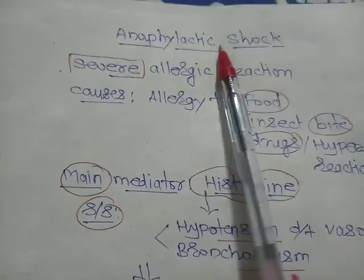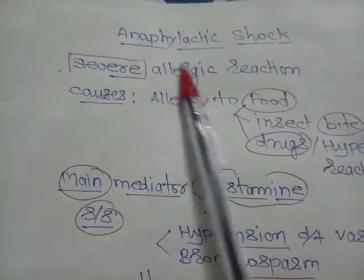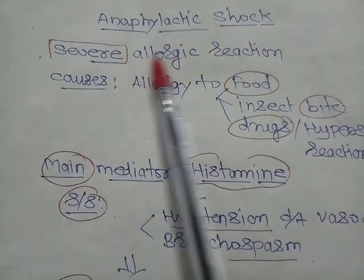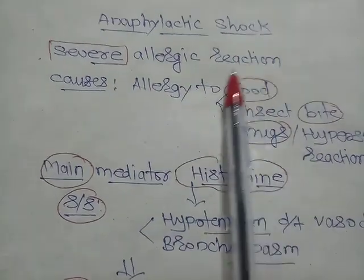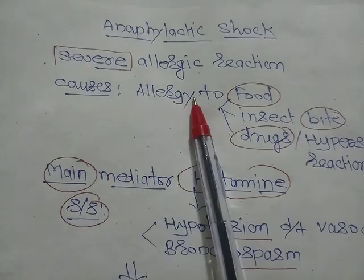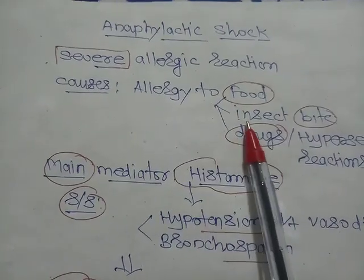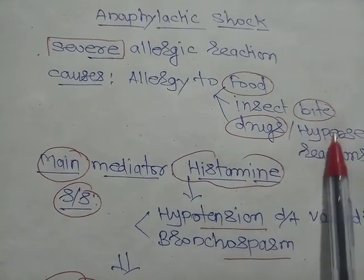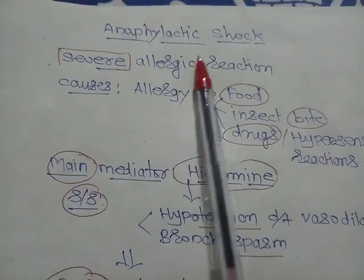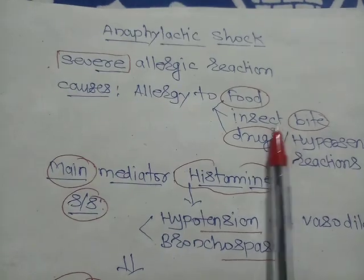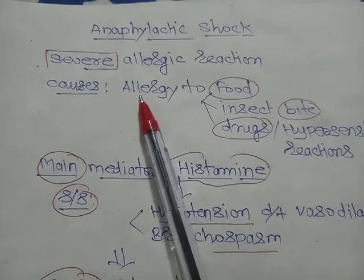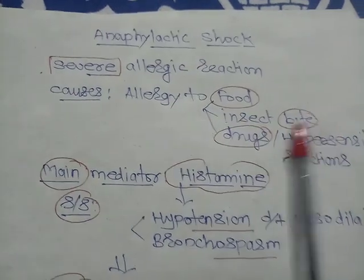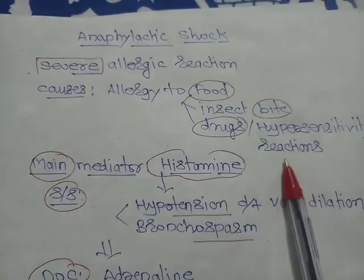Anaphylactic shock is a severe allergic or hypersensitivity reaction. It can occur due to allergy to food, drugs, or insect bite. So anaphylactic shock can occur because of any reason, particularly allergy to a specific thing like food, insect bite, or drugs.